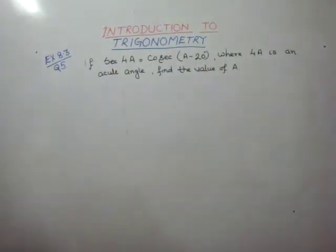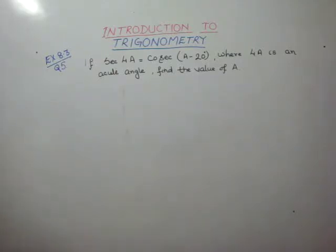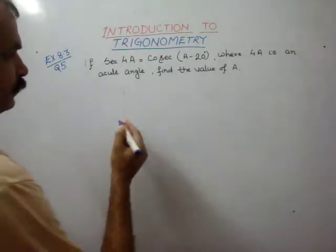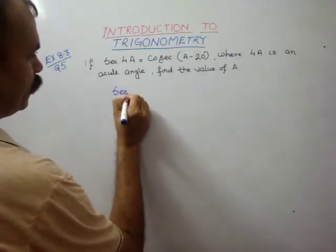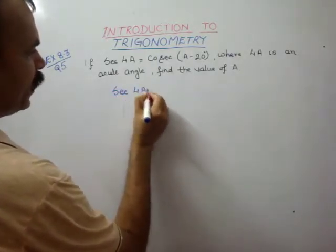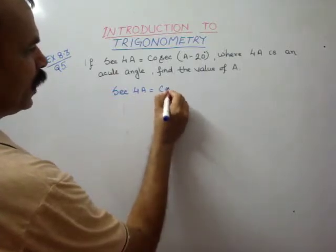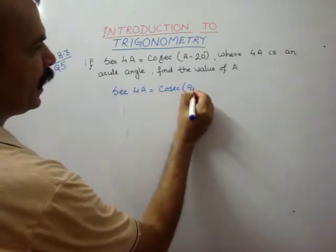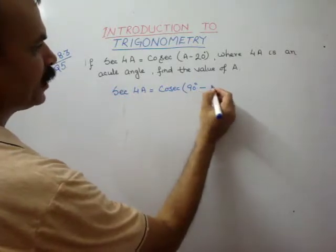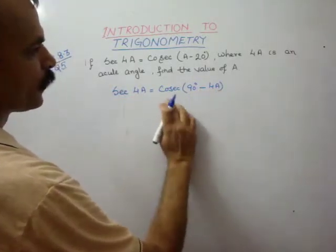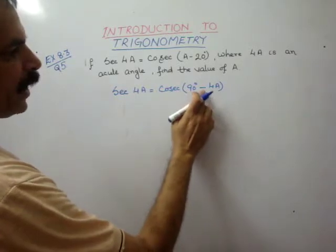Your question is: sec 4A is equal to cosec(A minus 20 degrees), where 4A is an acute angle, find the value of A. Now, what is sec 4A? sec 4A is equal to cosec(90 degrees minus 4A).